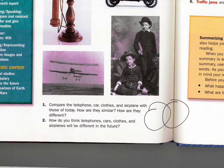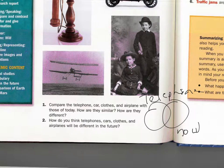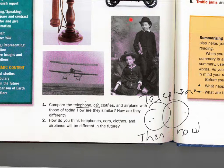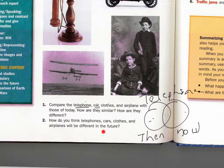One way to compare is with a Venn diagram — that's a pretty common way to compare. Let's say you wanted to do the telephone: how would you compare the telephone now with the telephone you see in this picture? Pick one of these four choices — telephone, car, children, or airplanes — and think about how they are different and how they are the same. I'd like to see this on the blank page in your homework packet.